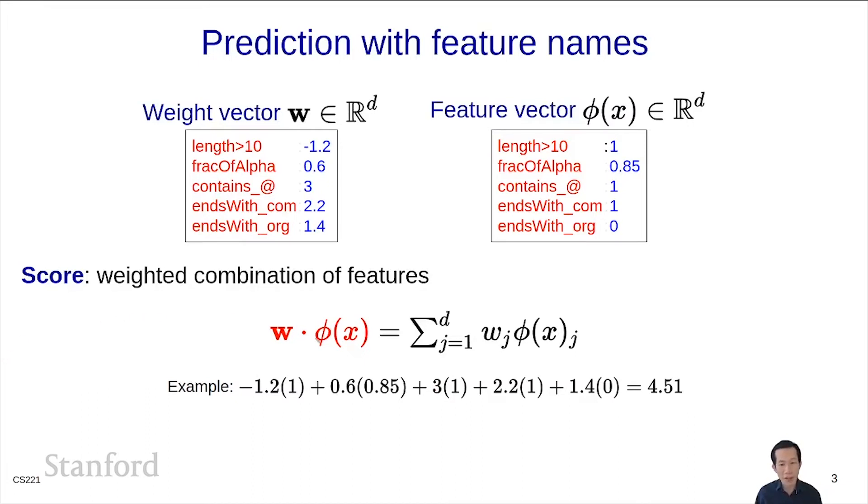A little piece of intuition here is that you can think about the score. Remember, in classification, positive scores result in positive classification. Negative scores result in negative classification. You can think about each feature as providing a vote. If phi of xj is 1 and wj is positive, that means it's voting in favor of positive classification. If wj is negative, it's voting in favor of negative classification. And the magnitude of wj determines the strength of the vote. That's another way to interpret the dot product before we previously saw that we can interpret as a cosine of the angle, which is a more geometric interpretation.